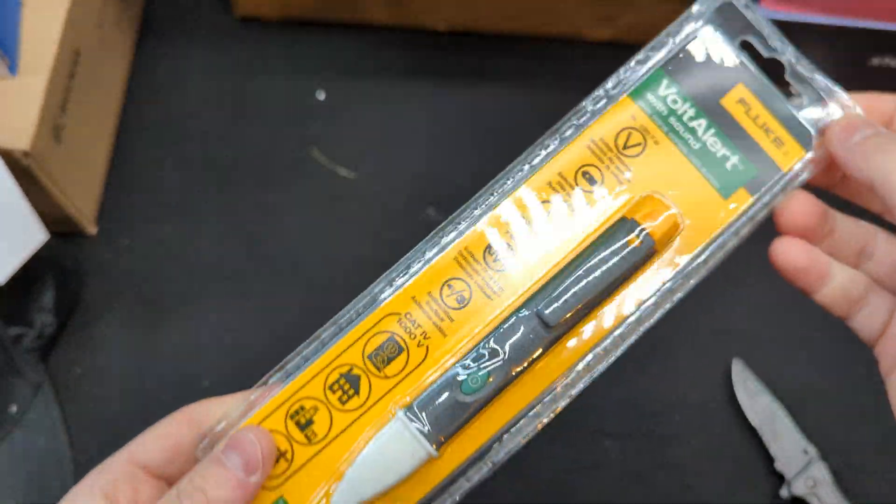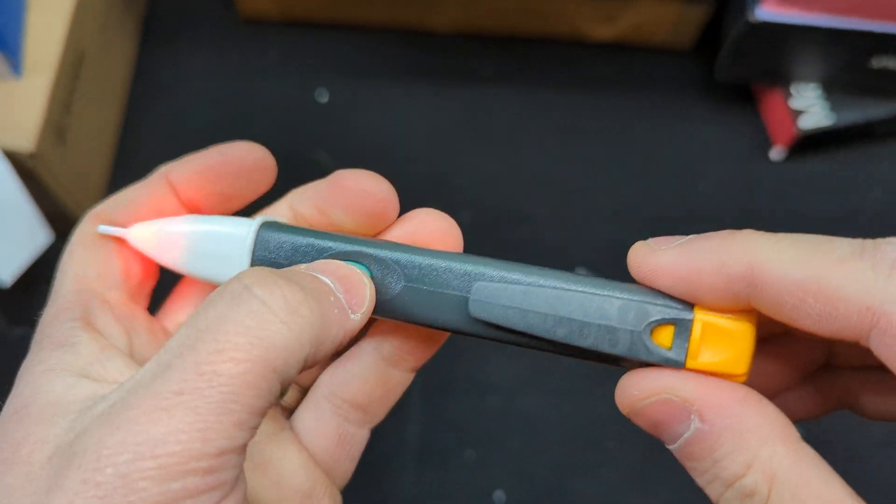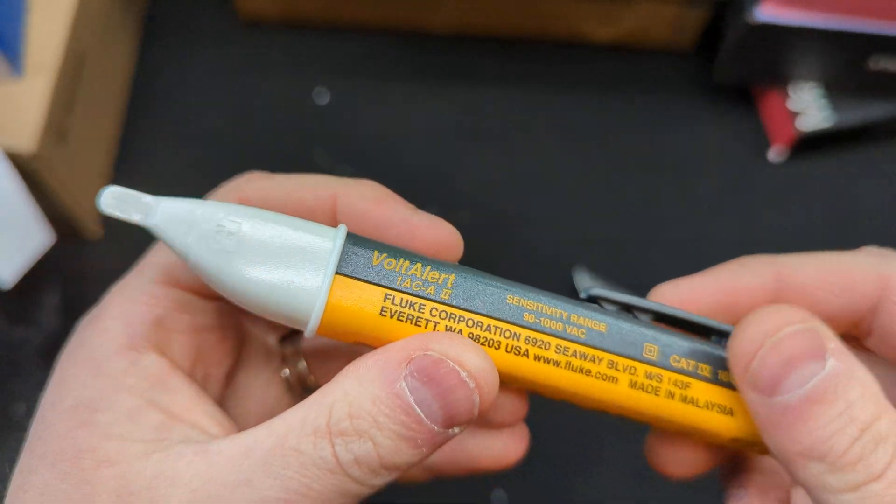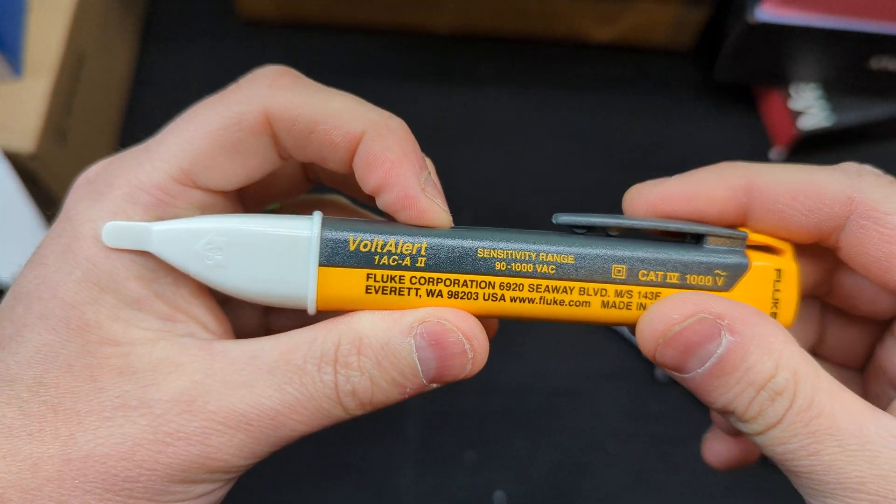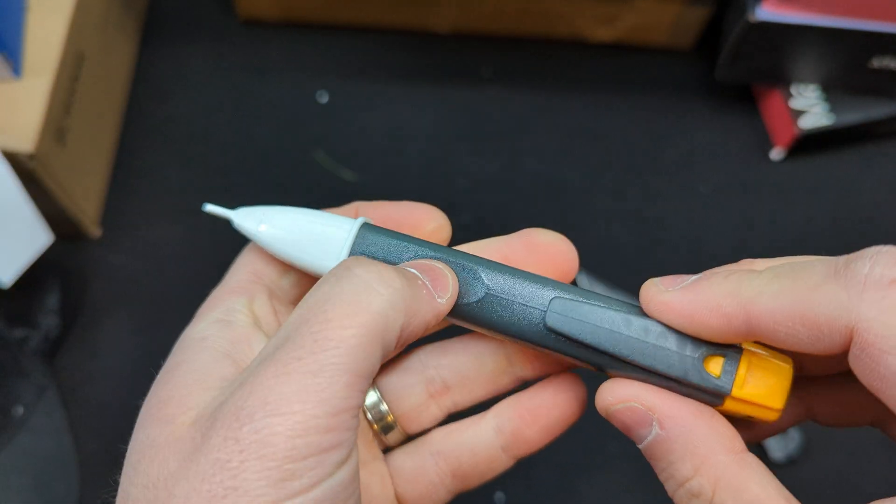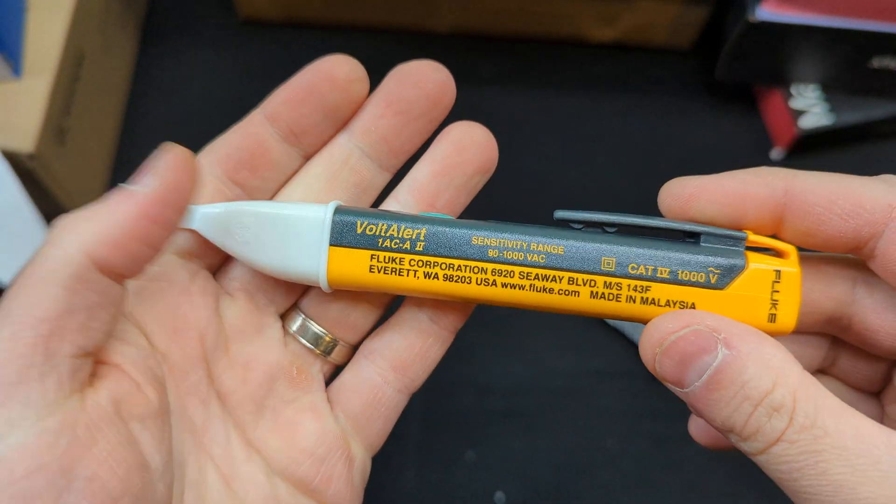This is a Fluke Volt Alert, so this is really nice and simple how to use. You have your on and off button right here. Press and hold to turn it off, just press to turn it on. It will make a sound right away.